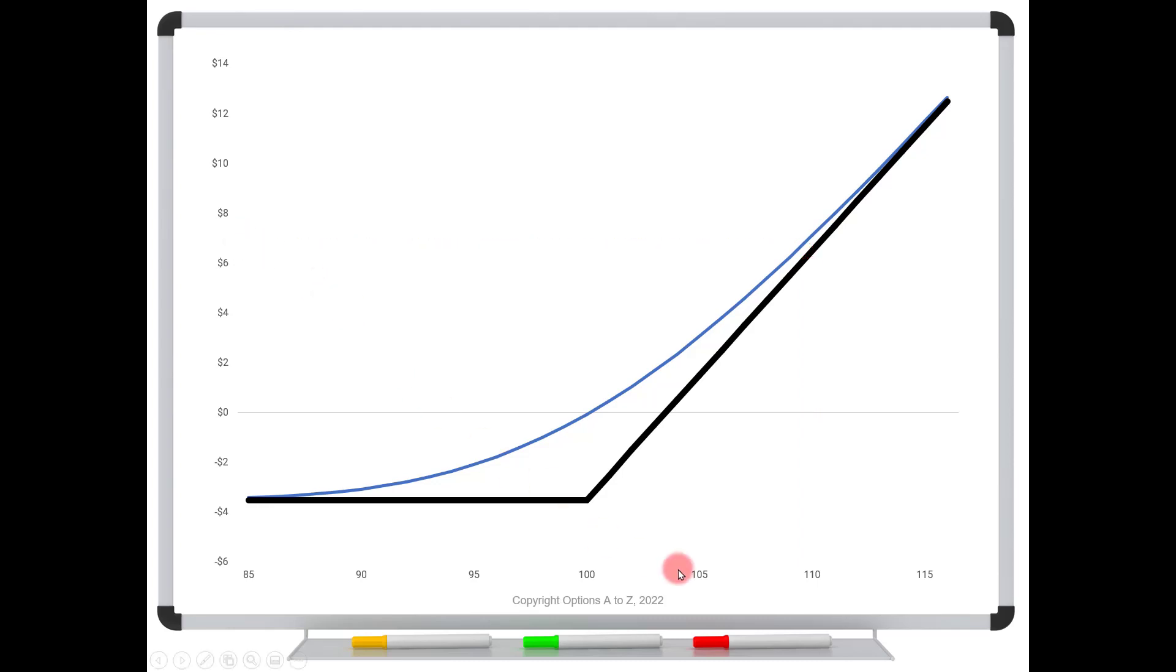Now also notice that as the stock price rises, this blue line is getting closer to the black. And that's because as the option starts going deeper and deeper in the money, it's getting closer to shares of stock. And so the extrinsic value is starting to bleed away.